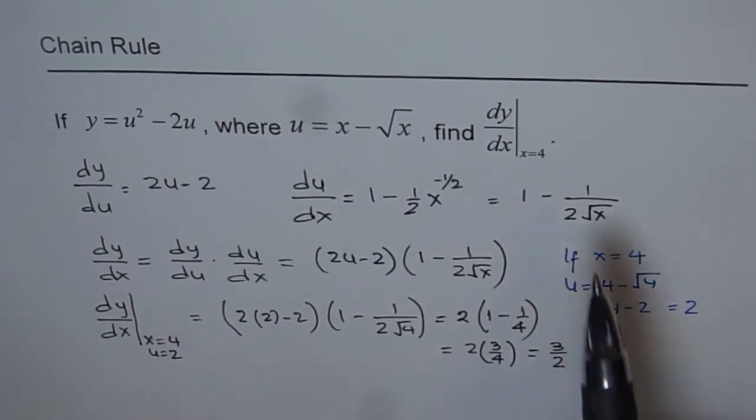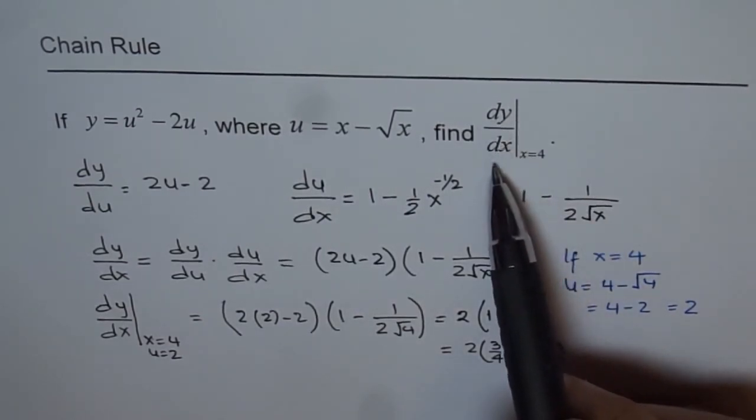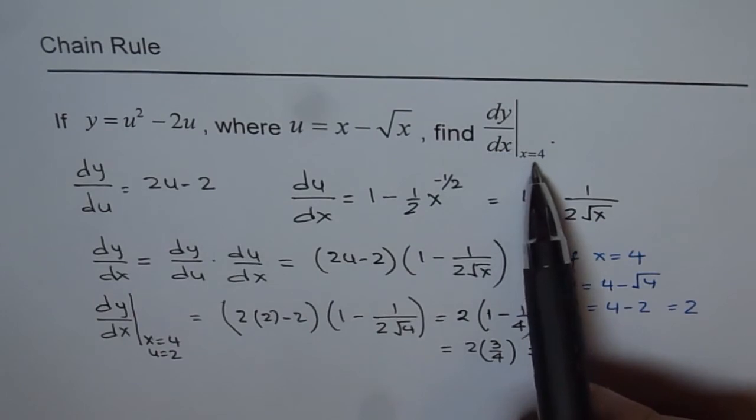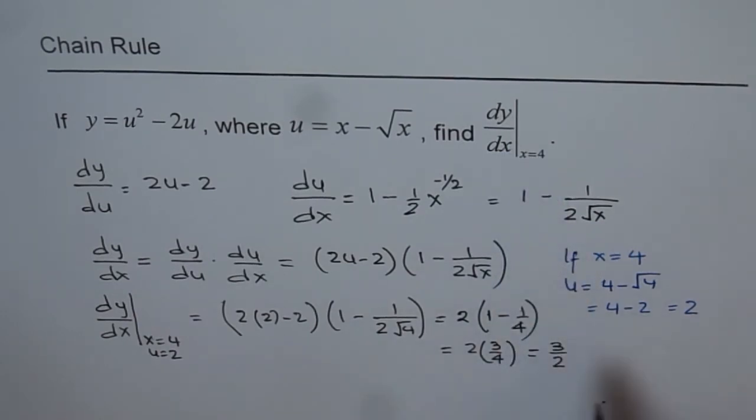Therefore, dy/dx at x equals 4 is equal to 3 over 2. That's our answer.